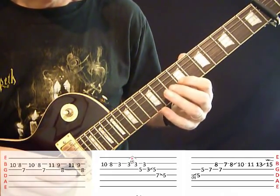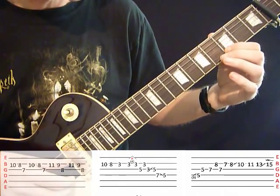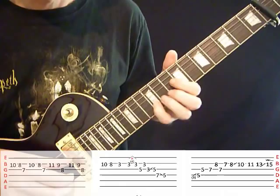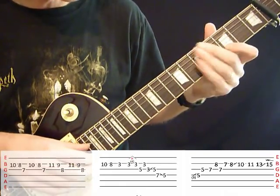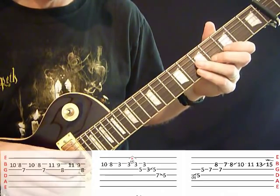Now instead of going here, on that last time, play that D here, 1st finger on the 3rd fret. That'll set you up for the next one, which is a little hammer on that 2nd finger onto the 4th fret.